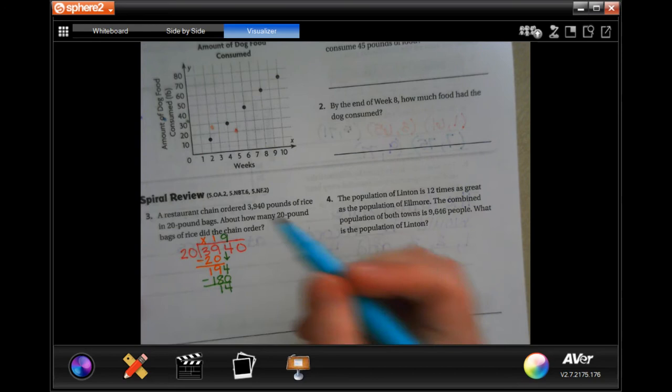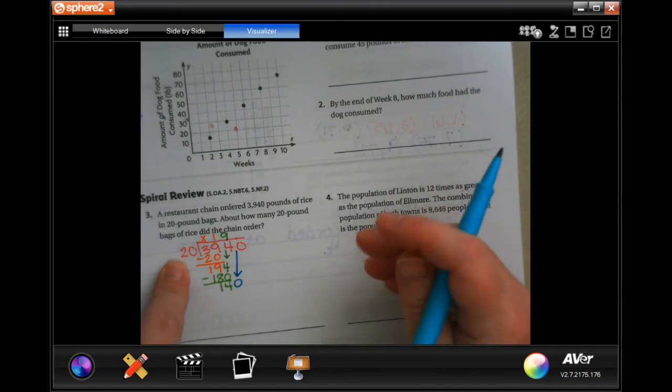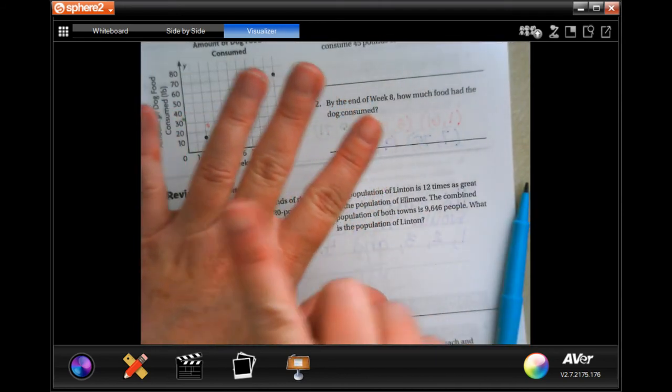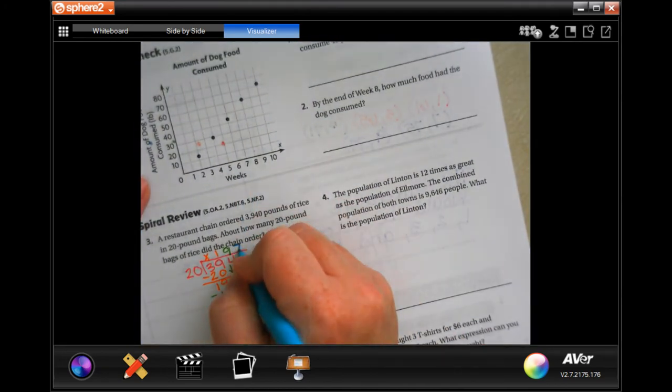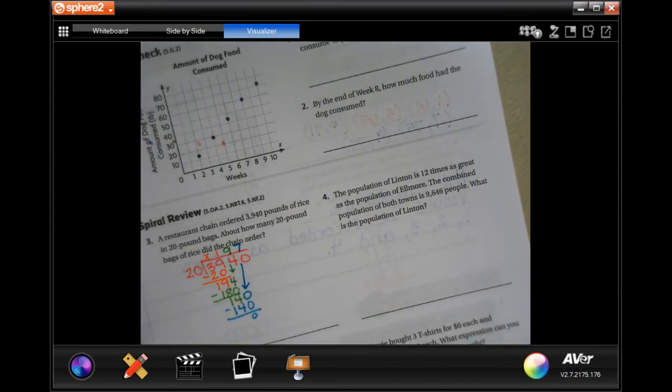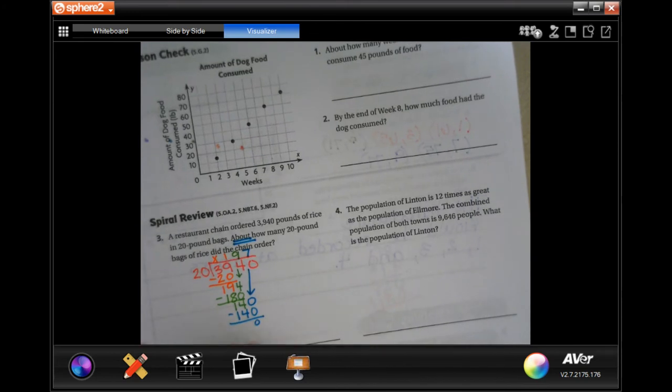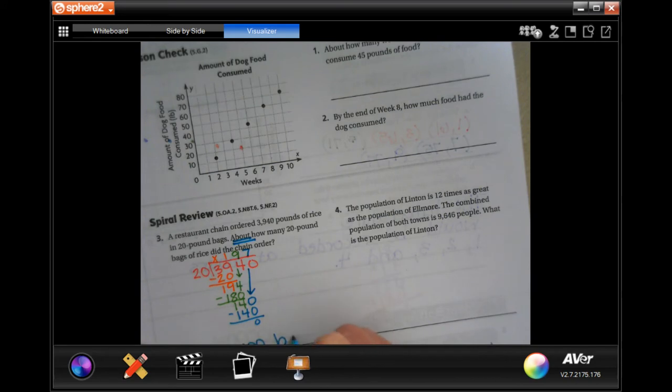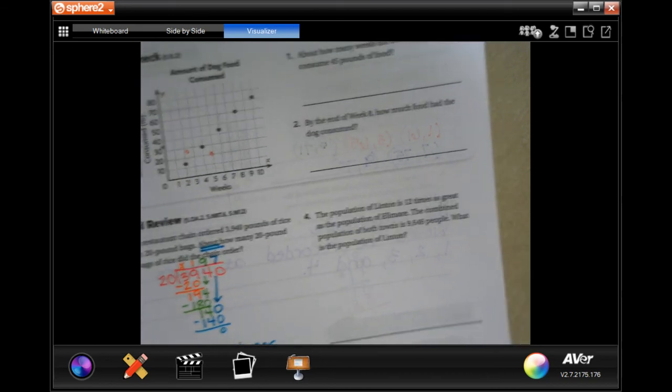So now we are going to—fourteen is less than twenty so I can bring down that last zero. Well, twenty goes into 140 seven times. Seven times twenty is 140, subtract, we get zero. So one hundred and ninety-seven, but it says about how many. We're going to round 197 to 200, so about 200 bags.